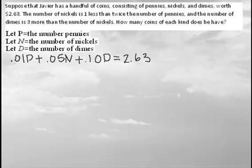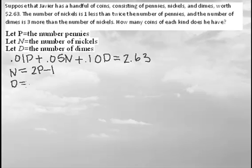Now they're telling us that the number of nickels is one less than twice the number of pennies — so n = 2p minus 1 — and that the number of dimes is three more than the number of nickels, so d = 2p minus 1 plus 3.